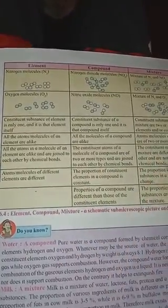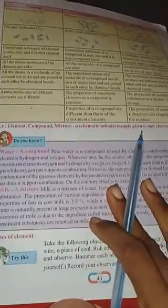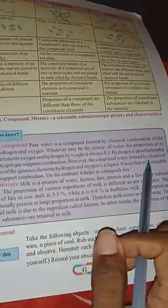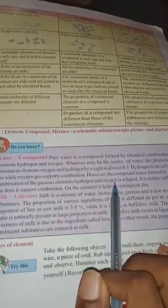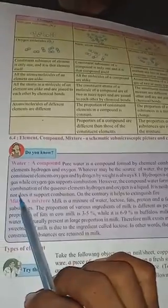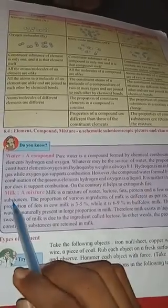Water is a compound. Pure water is formed by the chemical combination of the elements hydrogen and oxygen. Whatever the source of water, the proportion of oxygen to hydrogen by weight is always 8:1. Hydrogen is an inflammable gas while oxygen supports combustion; however, the compound water is a liquid that is neither inflammable nor supports combustion — it actually helps extinguish fire.